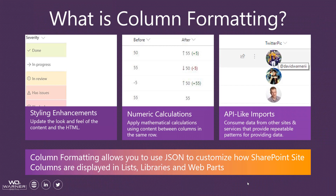Column formatting allows you to use JSON, JavaScript object notation, to customize how SharePoint site columns are displayed in lists, libraries, and web parts. Here are three different examples of how column formatting has been used — covering the spectrum from simple to a little bit more complex. This is really just meant to provide a taste of what can be done, as you can do way more than these three examples.